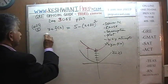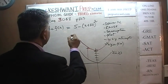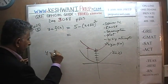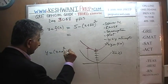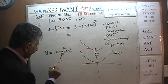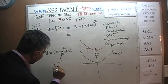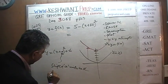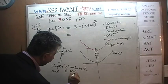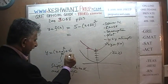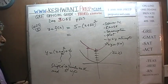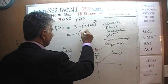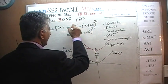We have to write this function in the form (x plus a) whole squared plus b. This tells us it has shifted a units to the left and b units up. So we write it as negative (x plus 20) whole squared plus 5.